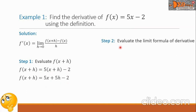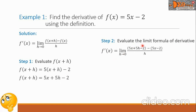For step 2, let us now evaluate the limit formula of derivative. So we write here f prime of x equals the limit of 5x plus 5h minus 2. This comes from our step 1, and this is our f of x plus h. Then minus f of x — this is the given function, the 5x minus 2 — all over h, as h approaches 0. Let us simplify by removing the grouping symbol of our numerator.